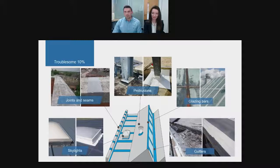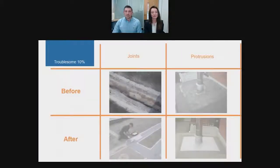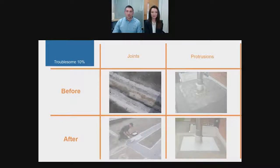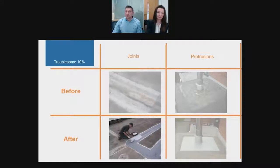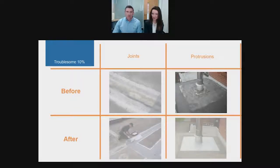Looking at joints and seams — the movement of a building is concentrated at weak points, which can occur between two separate parts of a building or between two dissimilar building materials. When leakage occurs, its origin can generally be traced back to these weak points. A flexible solution would be ideal for this repair. In this picture they purposely chose a membrane because it could be used for just the joints without having to coat the whole roof.